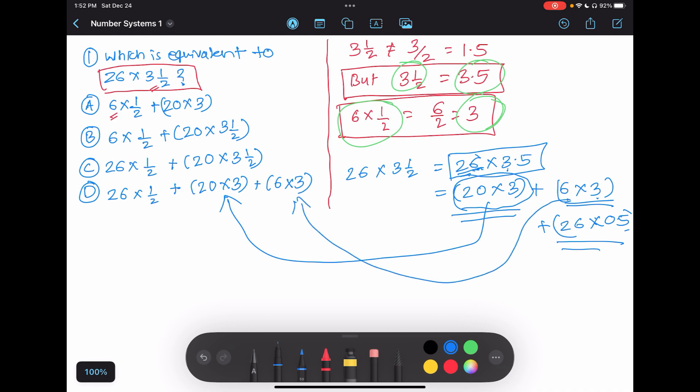Here I can see 20 multiply by 3 and 6 multiply by 3, so this might be a potential answer. What's the other part remaining? I can put this in brackets: 26 multiply by ½. Here we have 26 multiply by 0.5, and 0.5 means ½, so 26 multiply by ½. This answer is D.